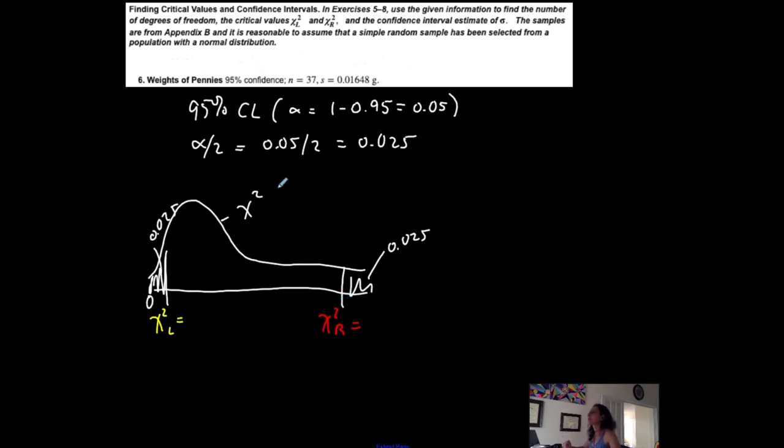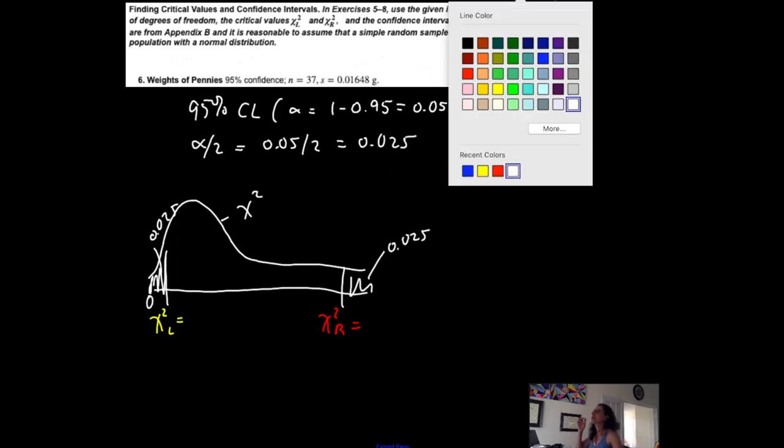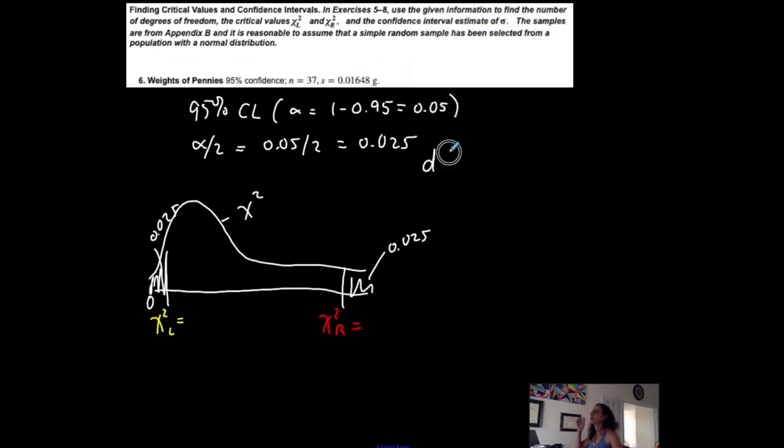So I started the same way that I did before. One more thing that I need, degrees of freedom. So degrees of freedom are dependent on sample size, which is n. n minus 1 are my degrees of freedom, so in this case 36, because my sample size is 37.